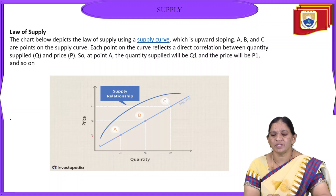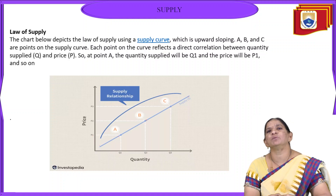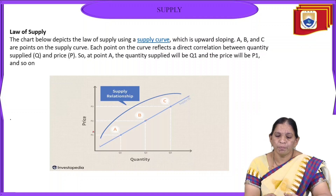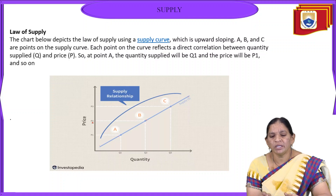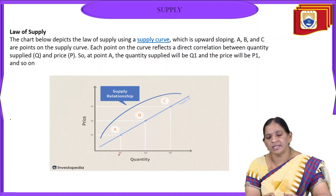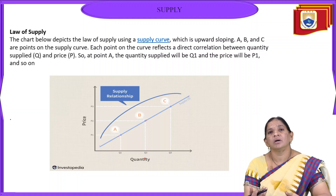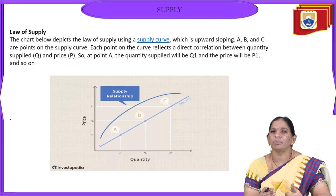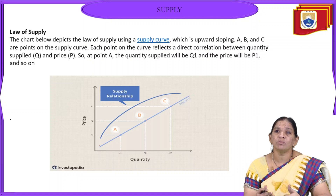For example, when the price of goods is 10 rupees, the quantity supplied may be 50 units. But when the price increases from P1 to P2, automatically the quantity will also increase from Q1 to Q2. With a further increase in price in the market, the quantity the producer wants to supply will also increase more.